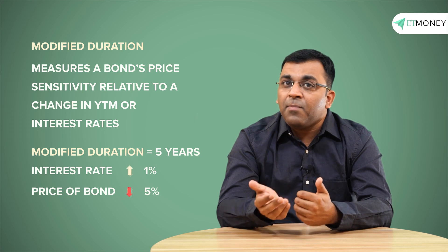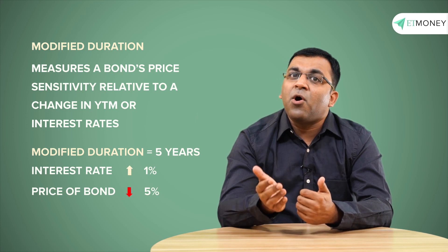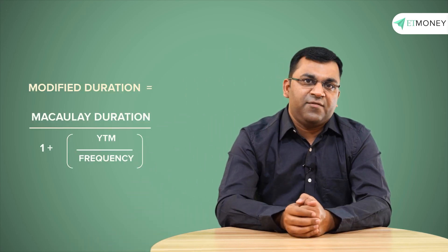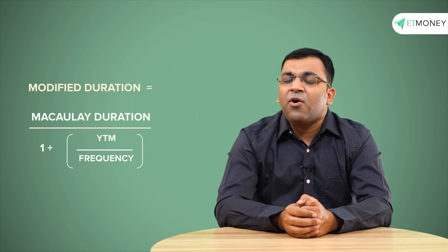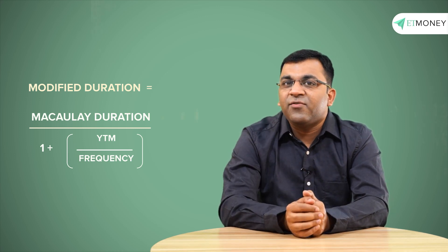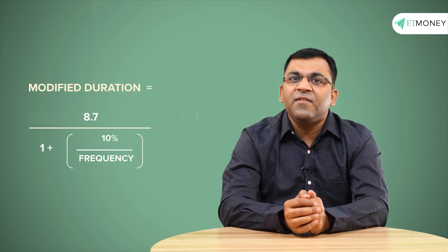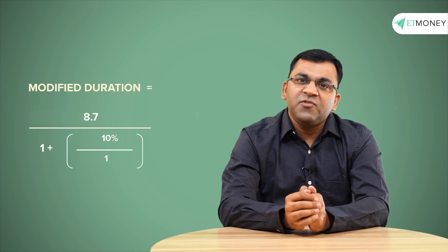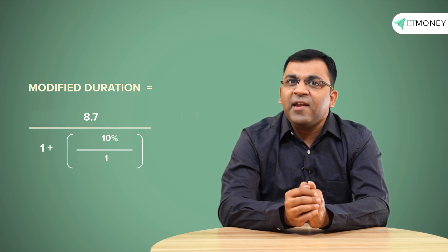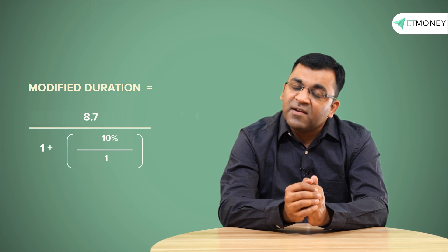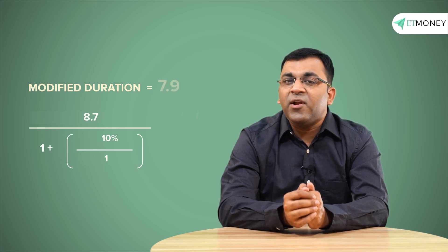The reason we covered Macaulay duration before modified duration is because the formula for modified duration is derived from the Macaulay duration itself. Applying the formula on our previous example: the Macaulay duration was 8.7 years, the YTM is 10%, and the frequency of receiving the coupon is 1 (once per year). The modified duration is therefore 8.7 divided by (1 + 10%/1), which comes to 7.9 years.